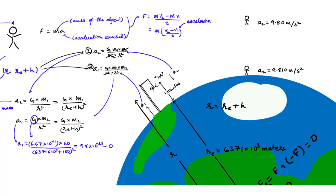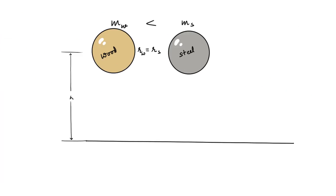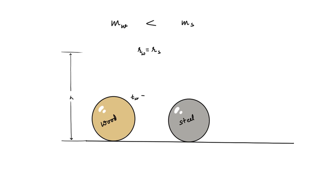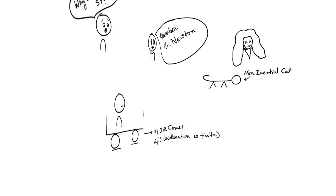So what we've learned: if you drop any two objects from a height, they reach the ground at the same time because their acceleration is independent of their masses — it depends only on the gravitational constant, the mass of Earth, and the center-to-center distance. Now in the second part of the video we'll look at a problem related to a non-inertial frame of reference, since in the last video I was explaining inertial frames.